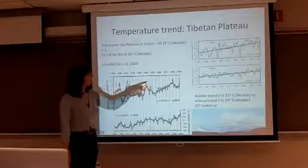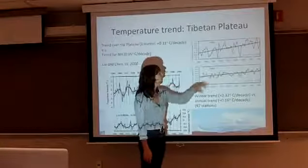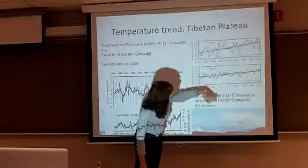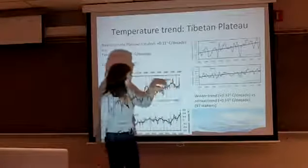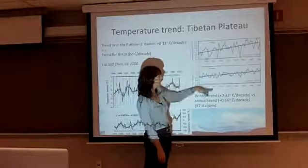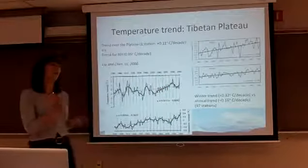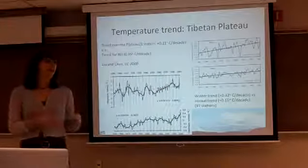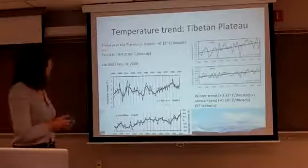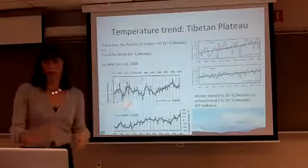On the right, this is the average for all 97 stations for the annual temperature. The trend is 0.02 degrees per year, but that's the trend for the winter. What's been observed is that for the winter, the trend is actually twice what it is for the annual means — so there is an increase in temperature that seems to occur mostly in winter.